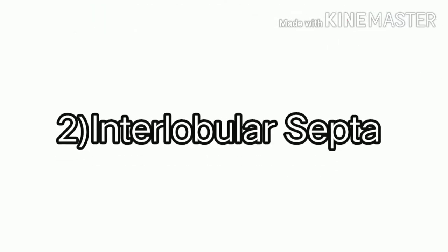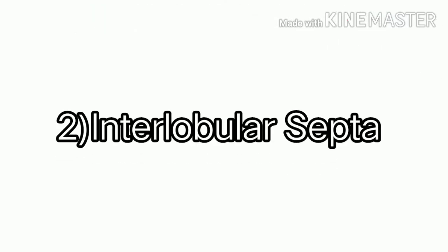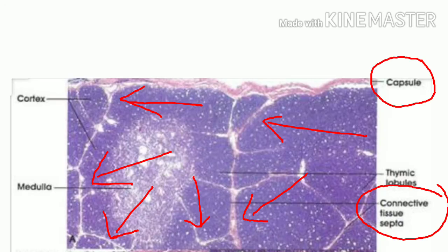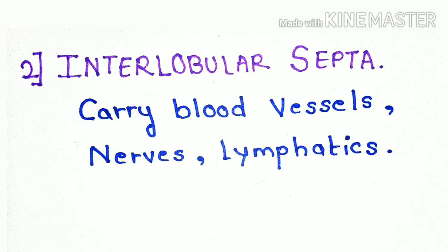The second component is the interlobular septa. The capsule sends its septa deep inside the parenchyma, dividing the lobules. The red arrow shows the interlobular septa, and it carries blood vessels, nerves, and lymphatics.